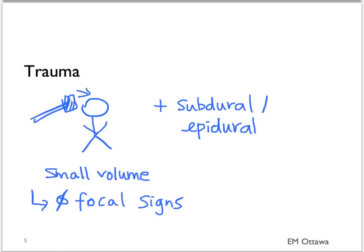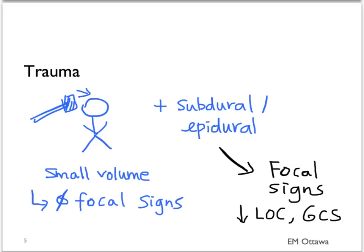However, since it is usually happening in conjunction with other bleeds, those bleeds usually cause neurological signs and will also decrease the patient's level of consciousness and GCS. As with all bleeding, the risk of this bleed is increased by the use of anticoagulants.